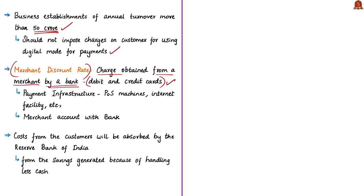To get payments through debit and credit cards, merchants have to buy and keep payment infrastructure such as Point of Sale machines and internet facility. Merchants also have to start a unique account called a merchant account with the bank to receive payments from customers. Since the bank provides such payment services, merchants have to give a payment to the bank for using the digital payment infrastructure. This payment is called the Merchant Discount Rate.